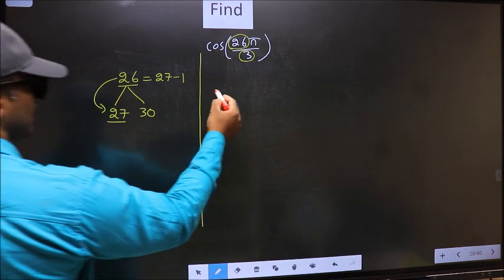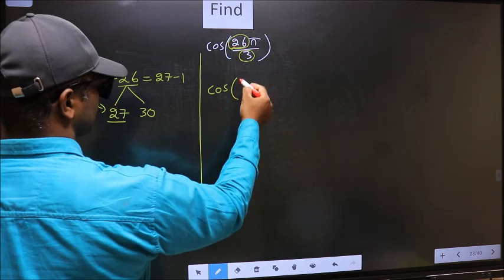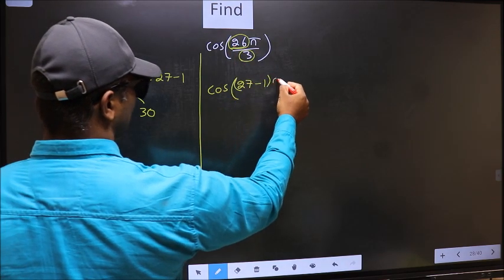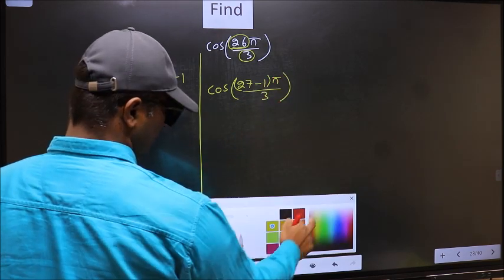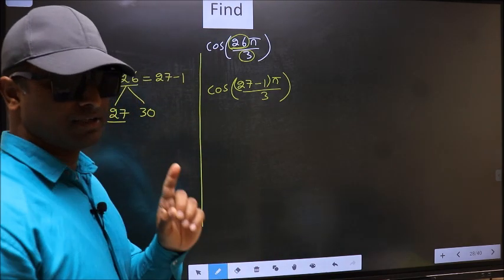So this will become cos. In place of 26, now I write 27 minus 1, π by 3. This is your step 1.